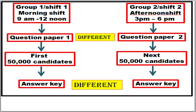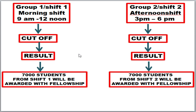With respect to the answer key released by NTA on the 22nd, you can download it. The question papers are different and the answer keys are also different — by entering your application number you can download your specific question paper and answer key. Many students think that since it is a different question paper, the cutoff will also be different per shift. For example, they think: if shift 1 is easy, the cutoff will be high — say around 55% for general category.